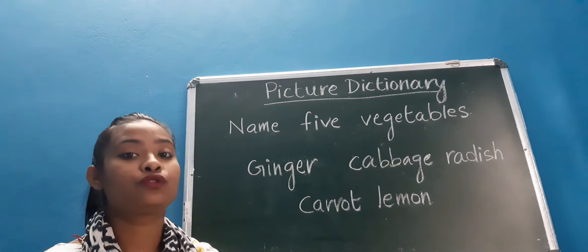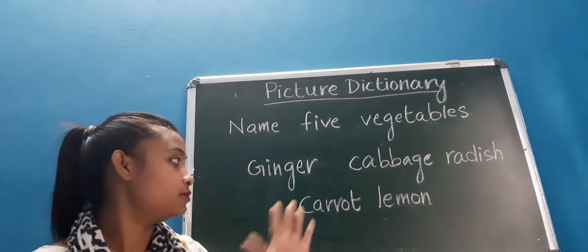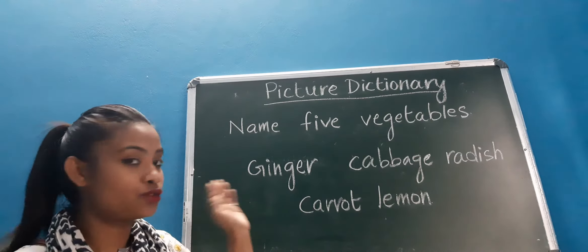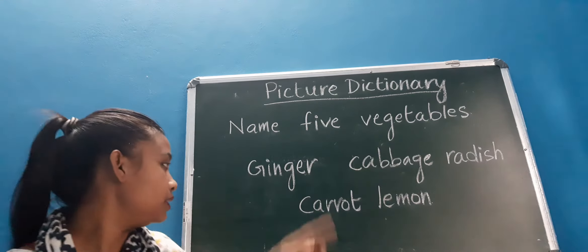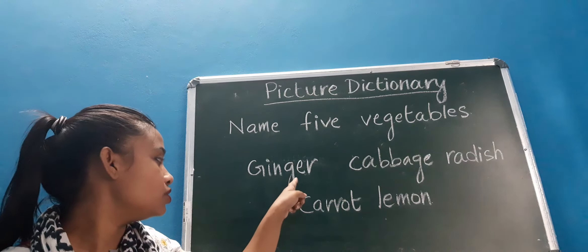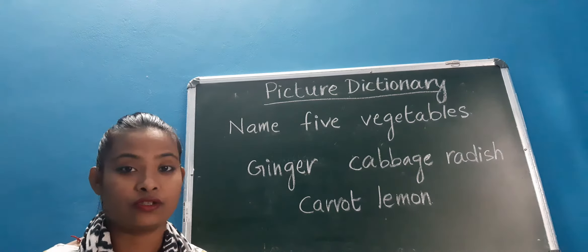So what you need to do is write five vegetables here. First one: G I N G E R, ginger. I repeat, G I N G E R, ginger.